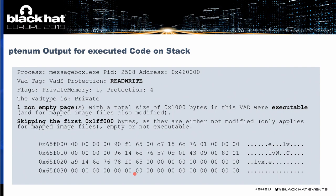The plugin we built is PTEnum — it's a Rekall plugin. Here we can see the output for this scenario. We can see a VAD with read-write protection, meaning the VAD states it's not executable, but we have one non-empty page in this area which is executable. Our plugin skips all non-executable pages until it gets to the first executable page and prints it out. The output is similar to Malfind with some additional information — how many bytes we skipped until we got to the executable part — and then prints out the memory and a disassembly of the malicious code.